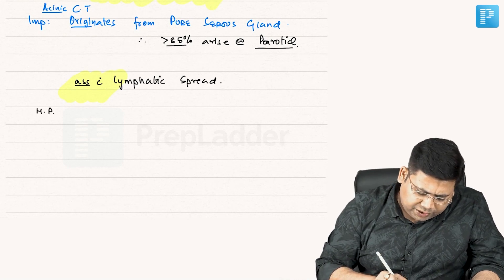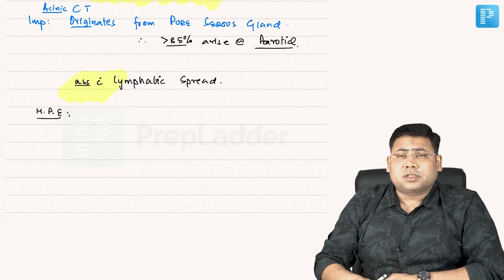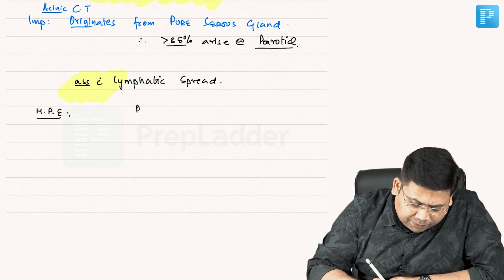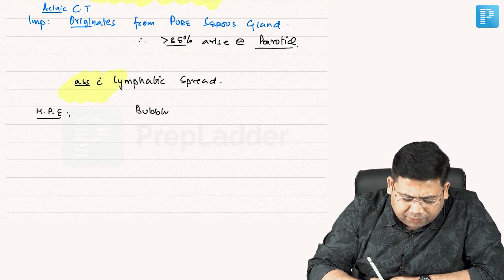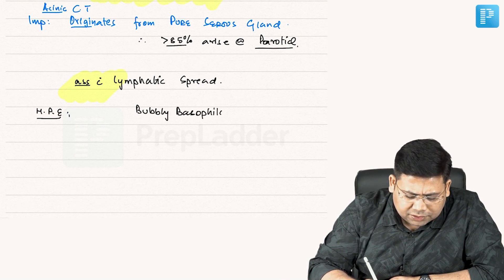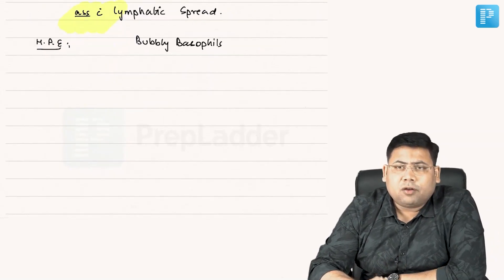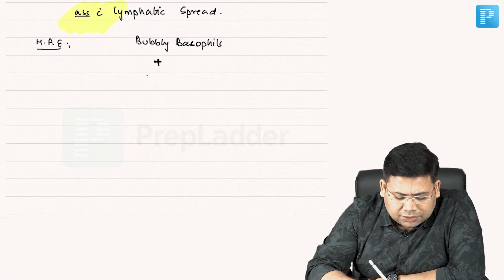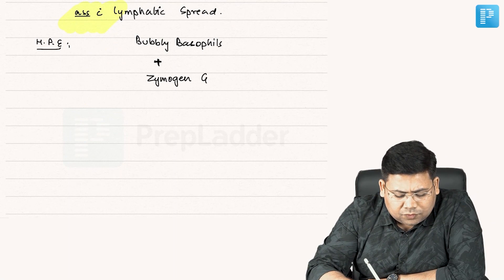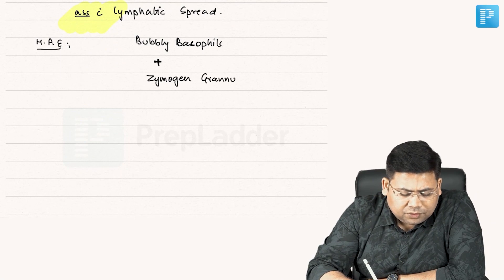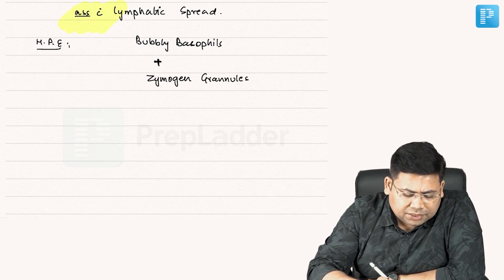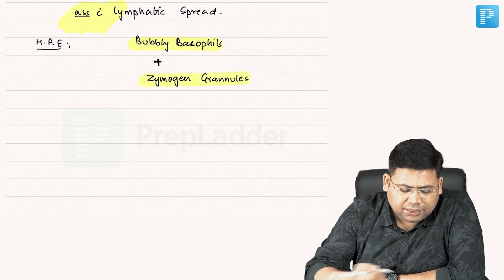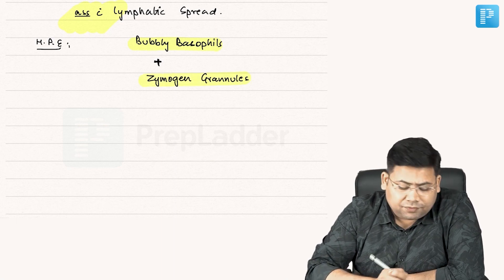On HPE — histopathological examination — what do we get to see? We get to see bubbles inside the basophils, and we say bubbly basophils. Along with that, we have zymosin granules. So bubbly basophils and zymosin granules — these are very important findings.